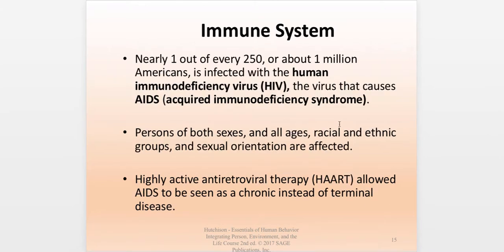Moving on to the immune system — the most obvious disorder we deal with these days is HIV and AIDS. About a million Americans are infected with HIV. When the T cell count goes extremely low and a few other conditions are met, a person with HIV is then considered to have AIDS. When this disorder first became known in the 1980s, it was essentially a fatal diagnosis — an individual diagnosed with AIDS could expect end of life within a short amount of time.